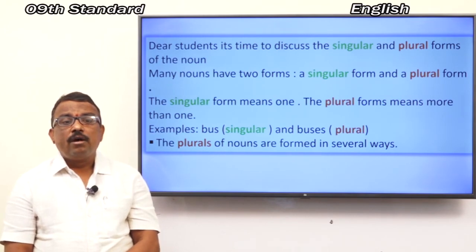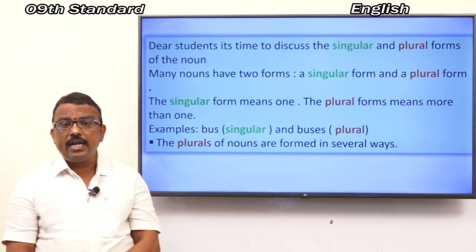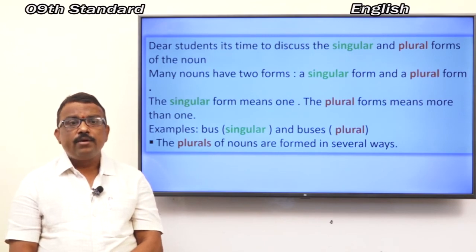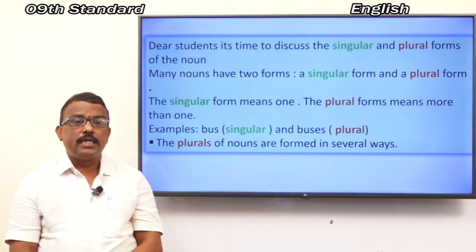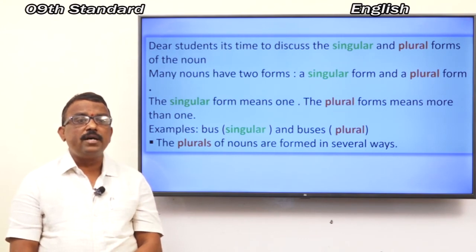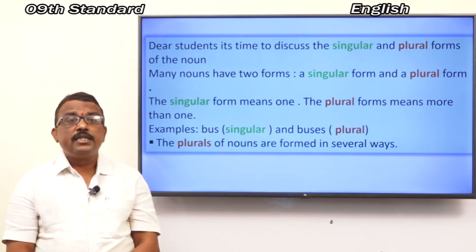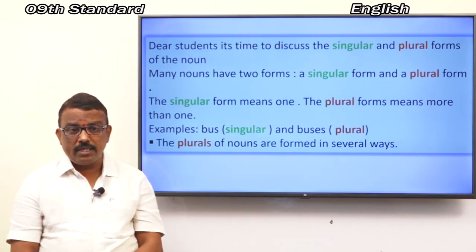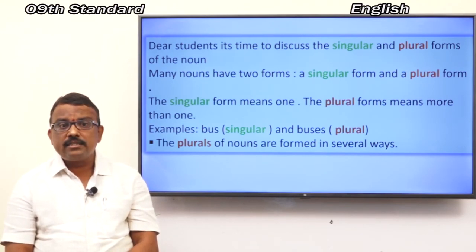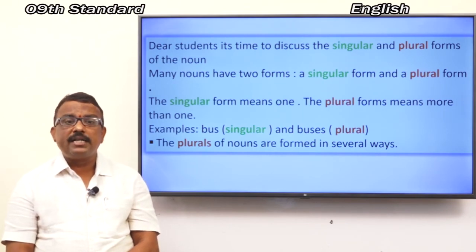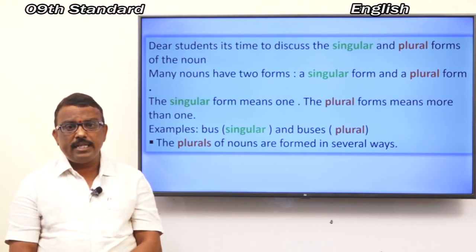Many nouns have two forms — singular and plural. The singular form means one: if there is one thing, it is called singular. More than one is called plural. Example: Bus — only one bus, it is singular. Buses — more than one, it is called plural. The plural nouns are formed in several ways — not just adding '-s'; there are many different ways, many routes, many changes.